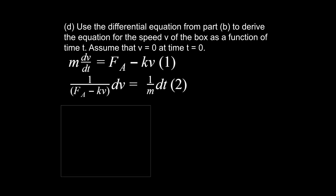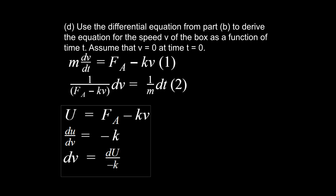Our next step is u-substitution, because when we take the integral of both sides we have a messy term in the denominator. So we let u equal that denominator. Taking the derivative of u with respect to v, the F_A goes away and we're left with minus k. We then solve for dv in terms of du, isolating dv so we can substitute it back into equation two.